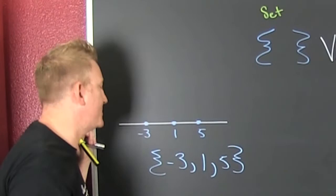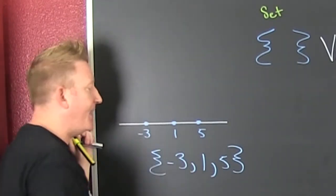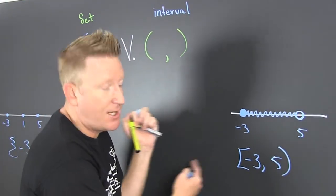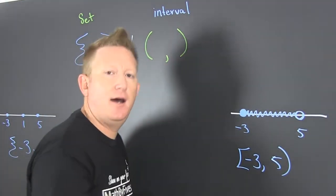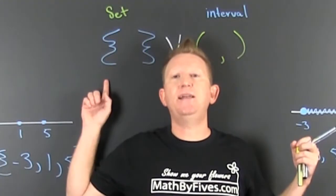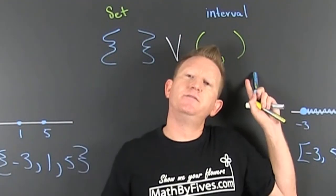Now the order doesn't matter in a set. So I could put them in any order, but the order does matter in an interval. It's lowest on the leftist, highest on the rightist. And that's the difference between the set notation and the interval notation.